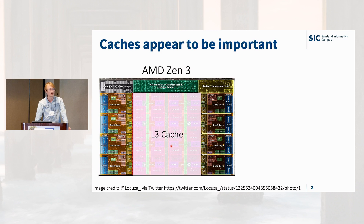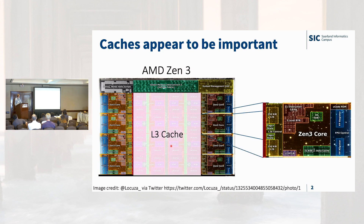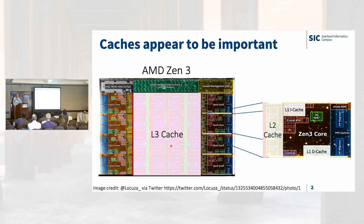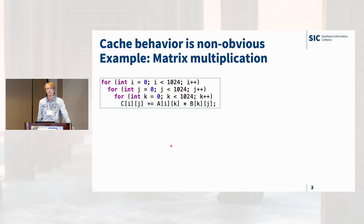What we see here is a die shot of a current AMD Zen 3 processor, and you can see that the die is sort of dominated by cache. Even if you zoom in to the cores, you can see that L1 and L2 caches are occupying lots of the die area. So caches are very important for performance, and at the same time, cache behavior is non-obvious.